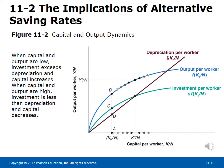Figure 11-2 shows capital and output dynamics. The blue curve, output per worker, shows output increases as capital per worker increases. Since saving and investment are a constant fraction of output, the green investment per worker curve has the same shape but lies below it. Depreciation per worker is a constant fraction of capital, shown as a straight upward-sloping line. When capital is low, investment exceeds depreciation and capital increases; when capital is high, investment is less than depreciation and capital decreases.